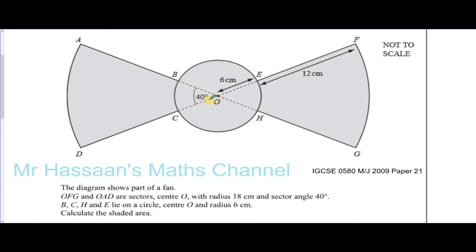You can see that sector OAD and OFG are identical. This is 40 degrees here—these are called vertically opposite angles. The size of these two angles must be 140 degrees because of angles in a straight line; these two add up to 180.